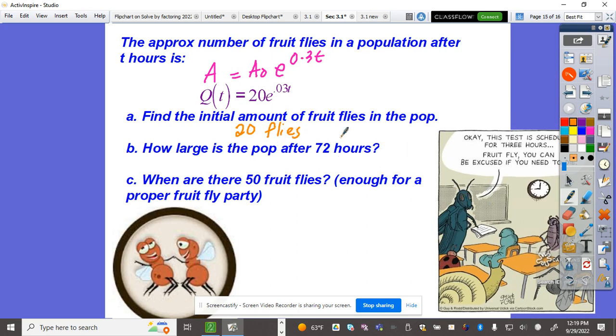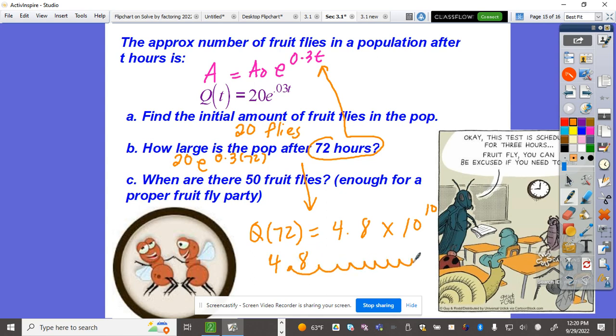How large is the population after 72 hours? Plug in 72: Q = 20e^(0.3×72). Second LN, 72 times 0.3 times 20. Q(72) = 4.8 × 10^10. That's around 4.8 - move the decimal point 10 times. That's 48 trillion.